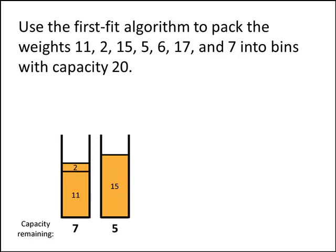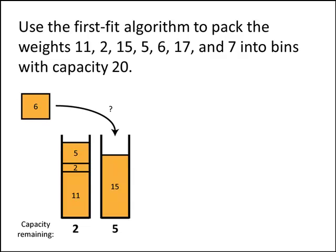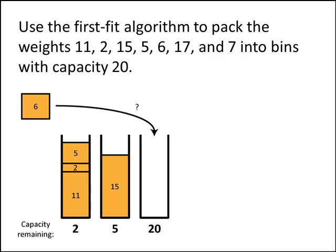The next weight on our list is 5. The first fit algorithm says: find the first bin in line that has room for the weight you're trying to pack. So we place weight 5 into that first bin. You might think it would have fit better into the second bin — we'll deal with that kind of issue when we talk about the best fit algorithm. Our next weight is size 6. It doesn't fit into the first bin, it doesn't fit into the second bin, so we need to create a third bin. That third bin starts with capacity 20, but once we pack in our weight 6, it has 14 spots remaining.